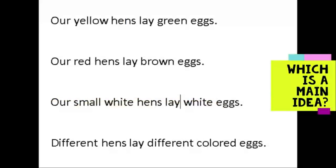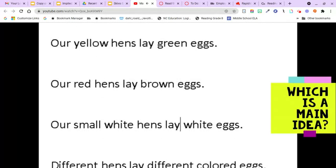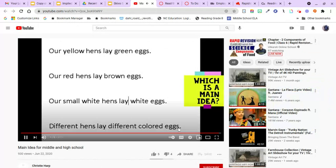Let's end with a little practice. Here are four statements — which one would be a main idea statement? 'Our yellow hens lay green eggs. Our red hens lay brown eggs. Our small white hens lay white eggs. Our different hens lay different colored eggs.' If you chose the last sentence — 'different hens lay different colored eggs' — you are absolutely correct. That is the main idea, or unifying idea, or thesis statement, and all the rest support it. By the way, I do have all those hens, and yes, they do lay all those different colored eggs.